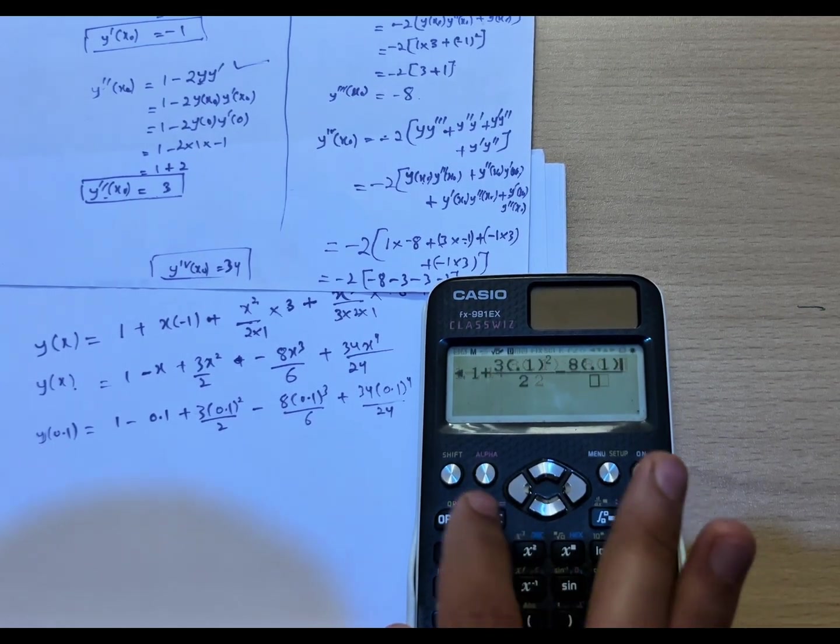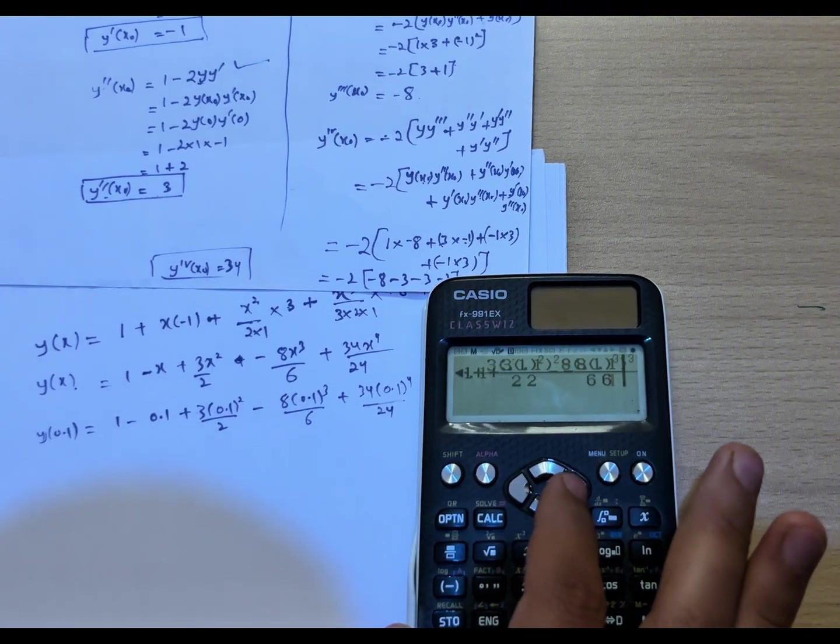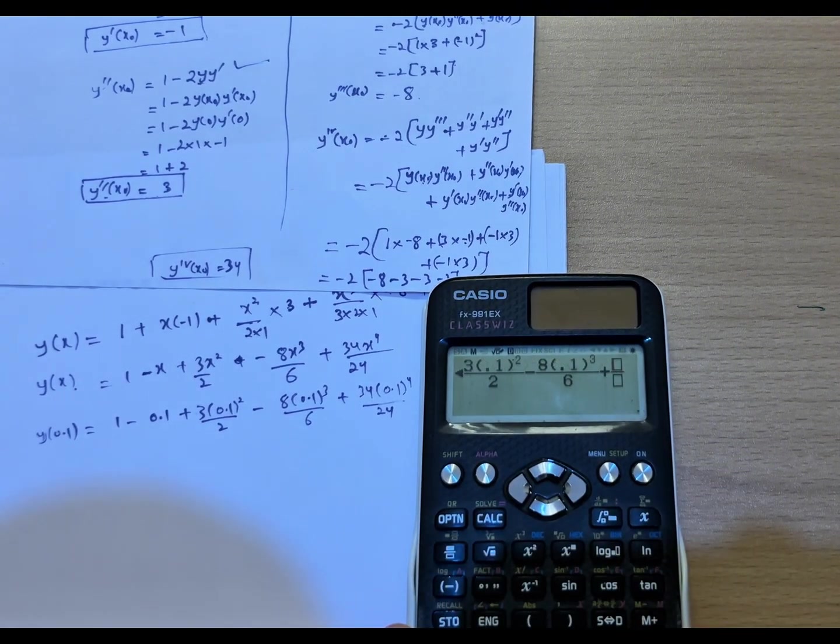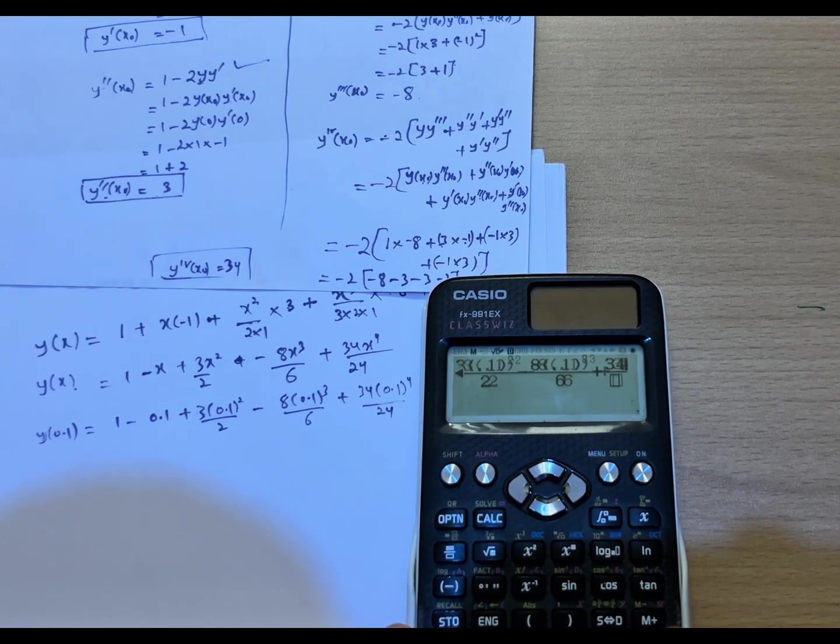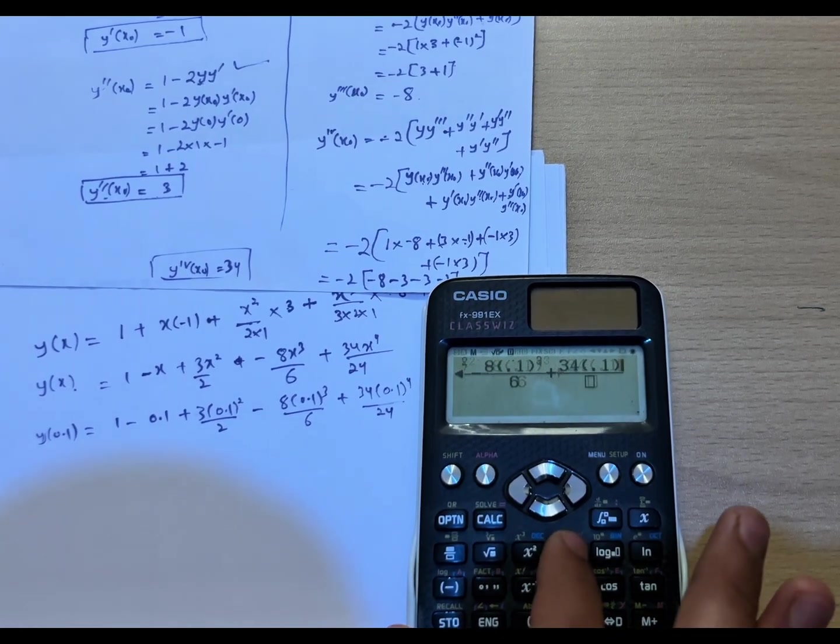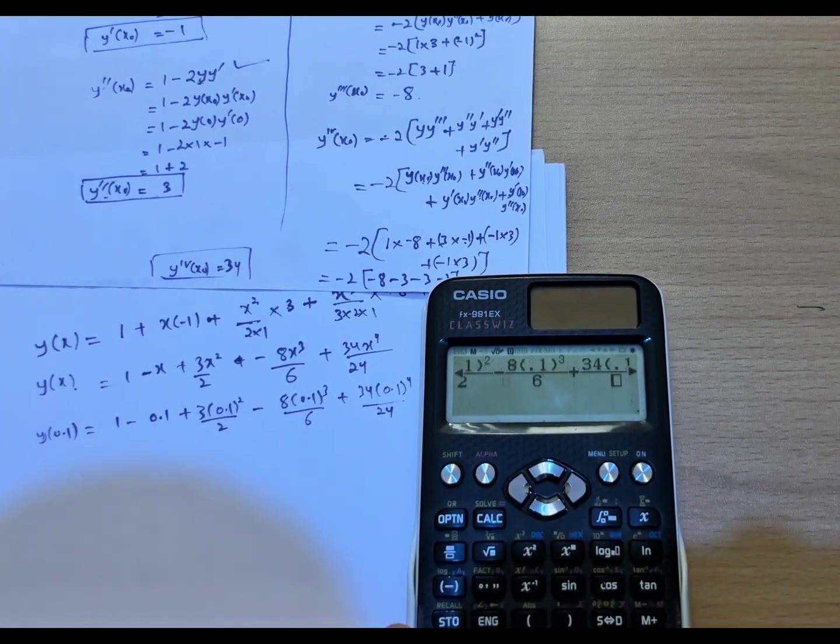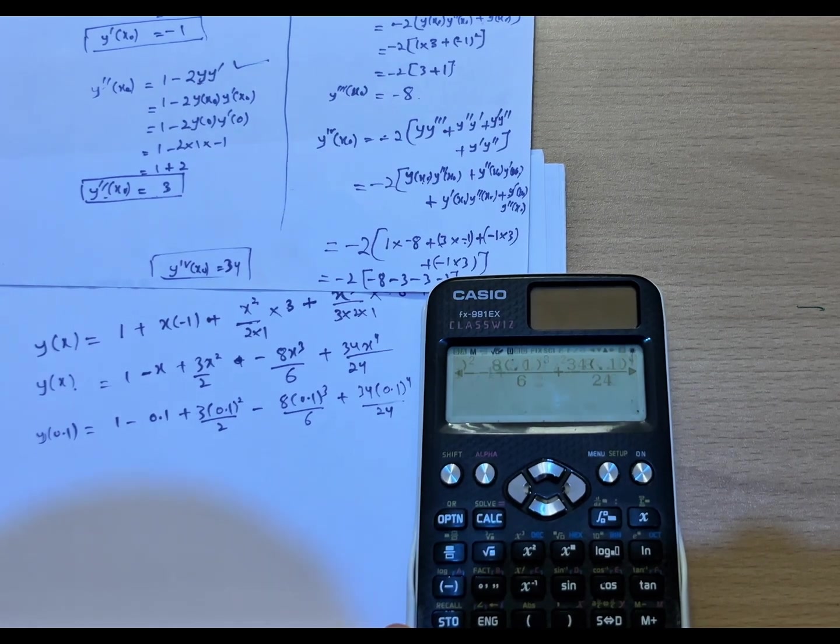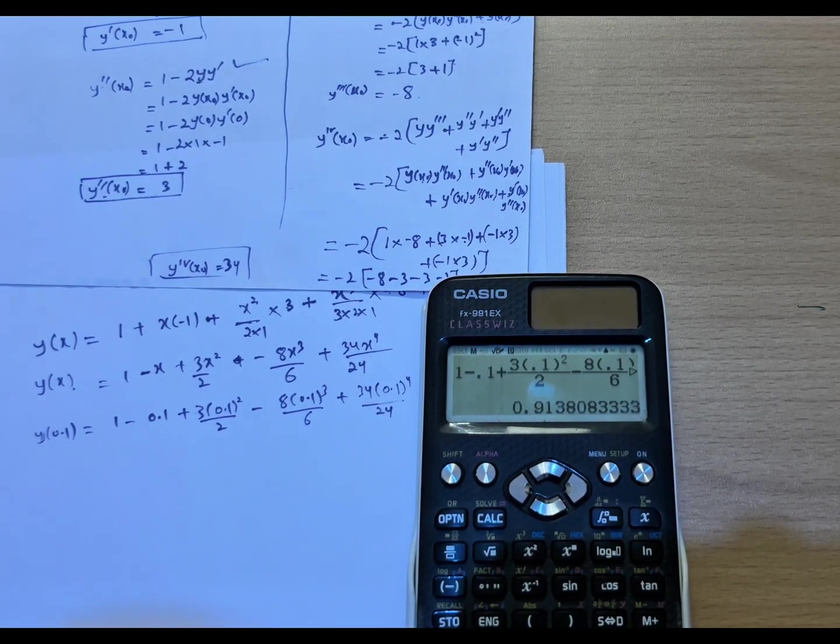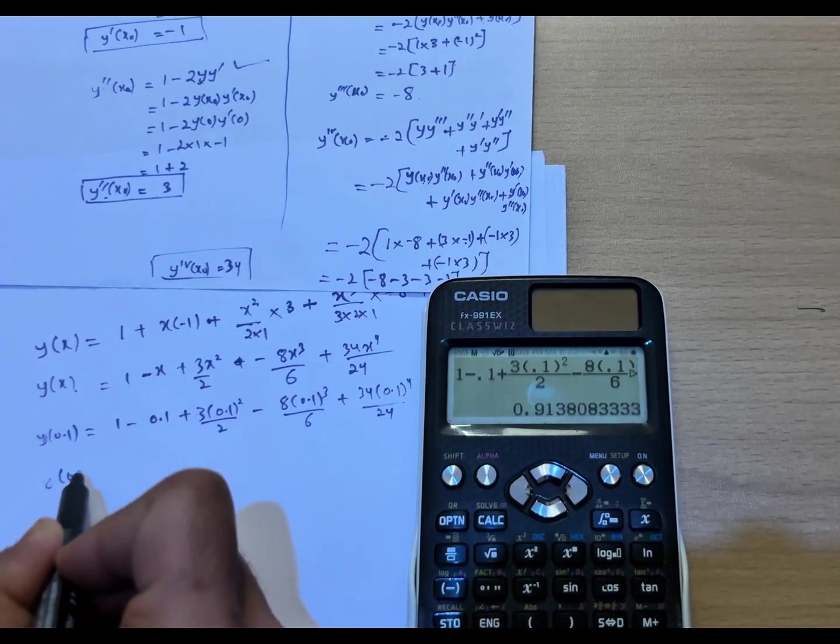Then again divide mode, 34 multiplied by 0.1 raised to 4, divided by 24, which equals 0.9138. So y of 0.1 equals 0.9138.